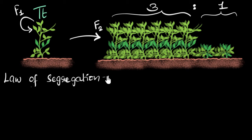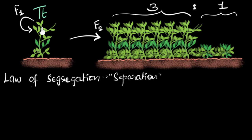The word segregation here means separation. Mendel guesses that when the gametes are formed in this plant — meaning the sperm cells and the egg cells — they do not carry both traits. When the traits pass into the gametes, they get separated: some sperms will get the tall trait, some sperms will get the short trait. Similarly, when eggs are formed in the ovary of the flower, some eggs will get the tall trait and some will get the short trait.